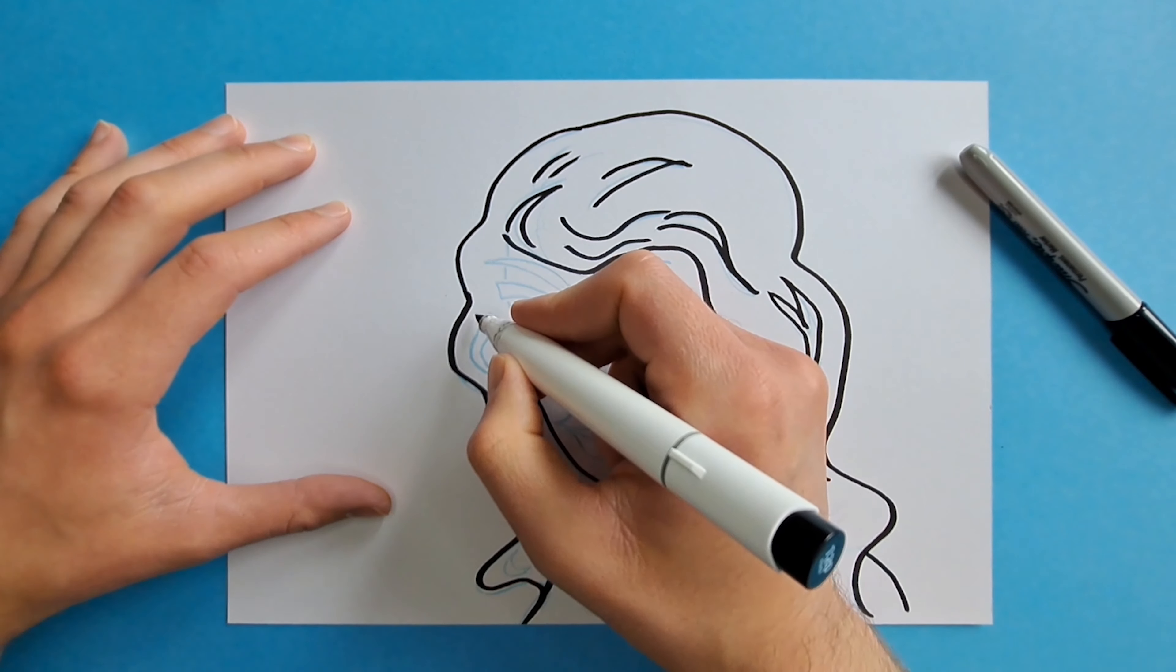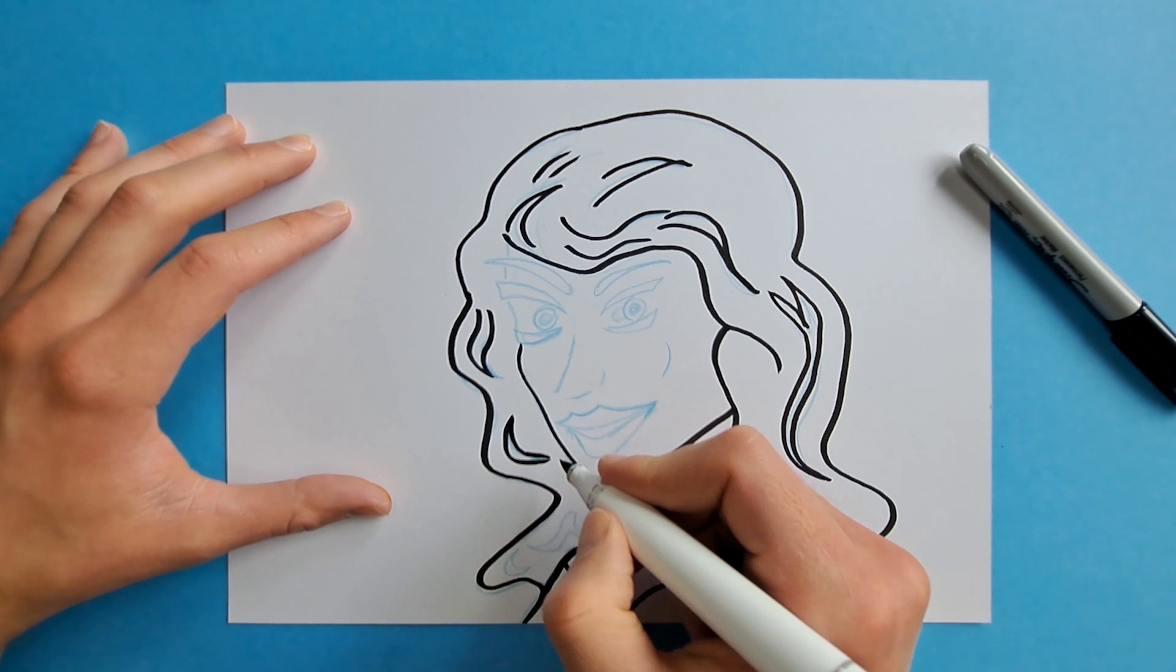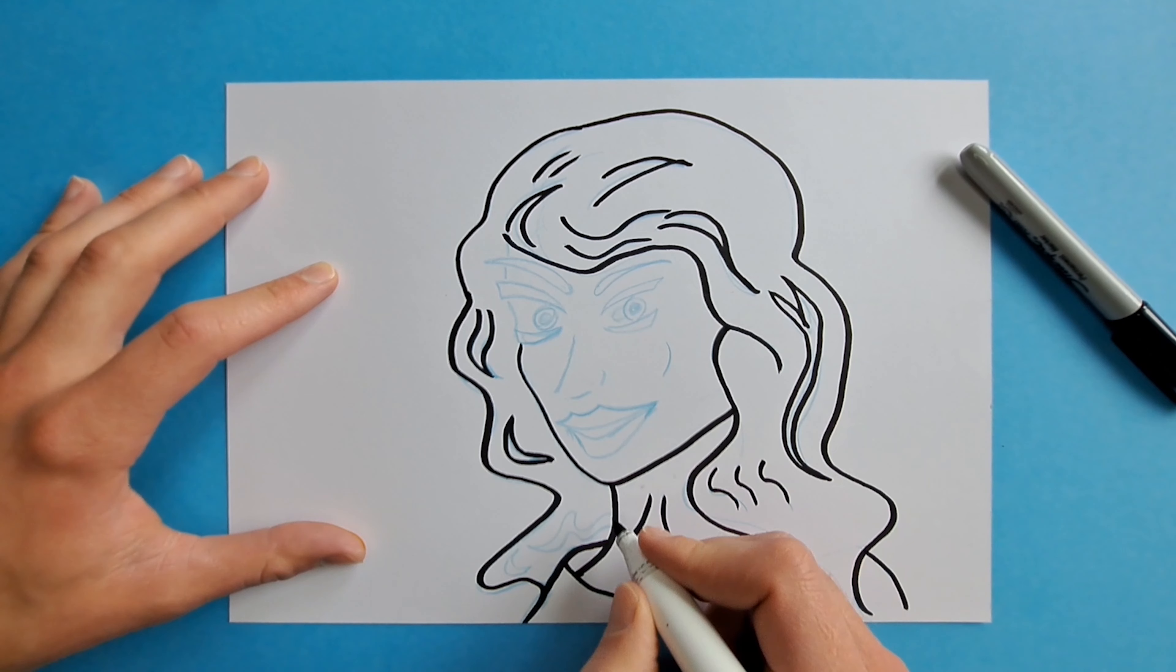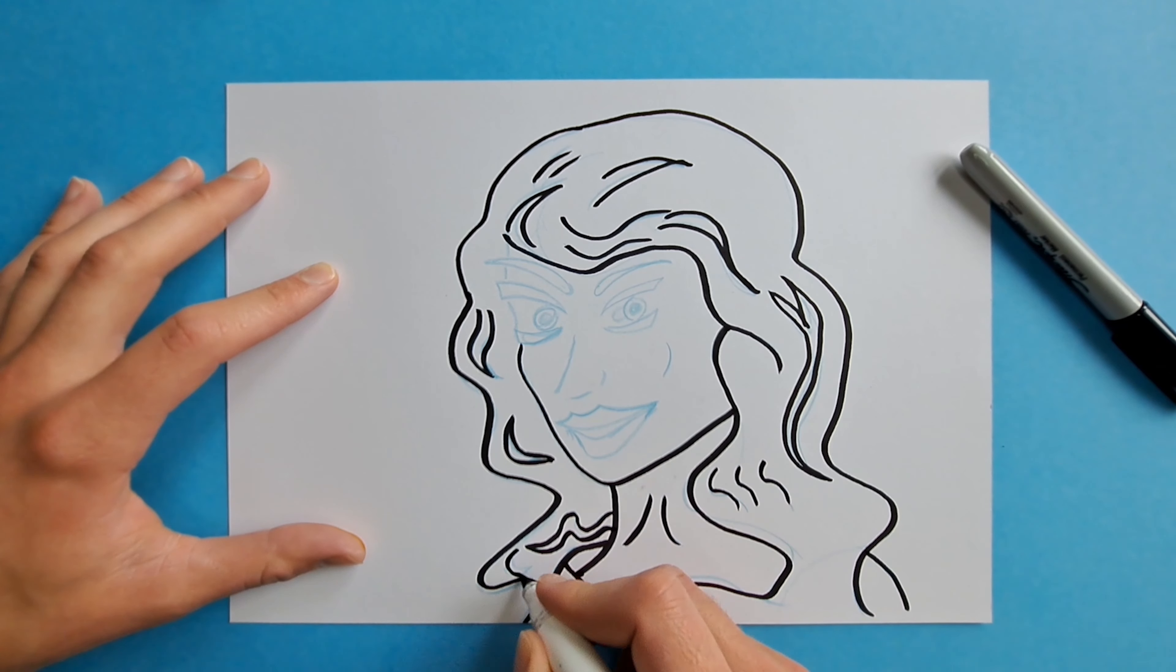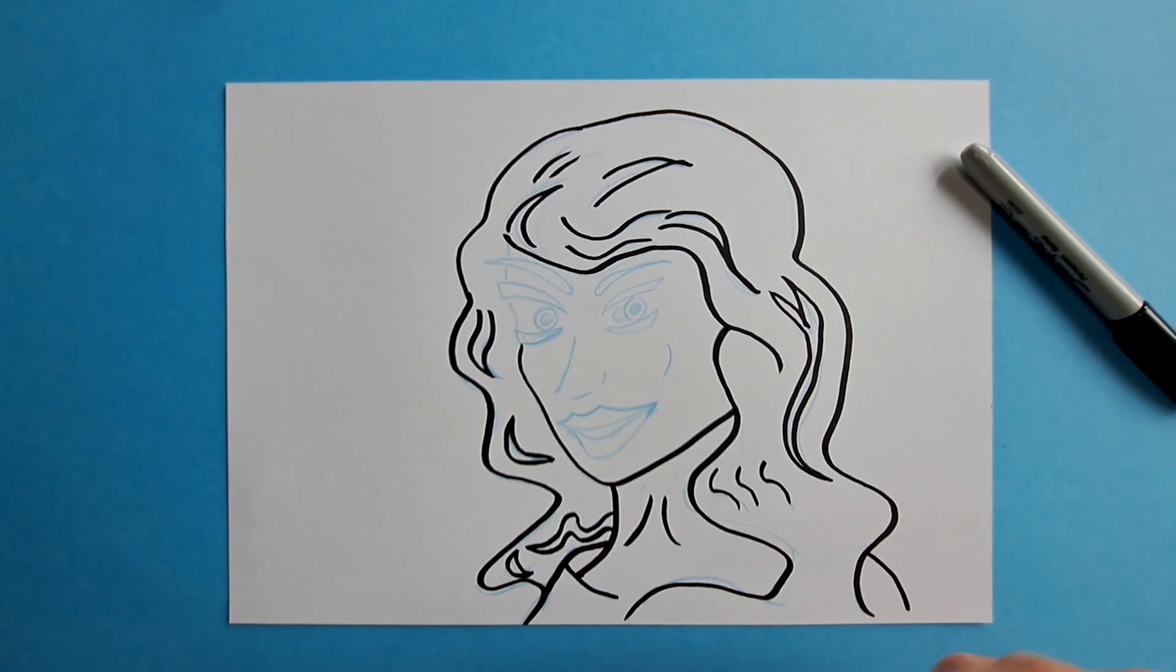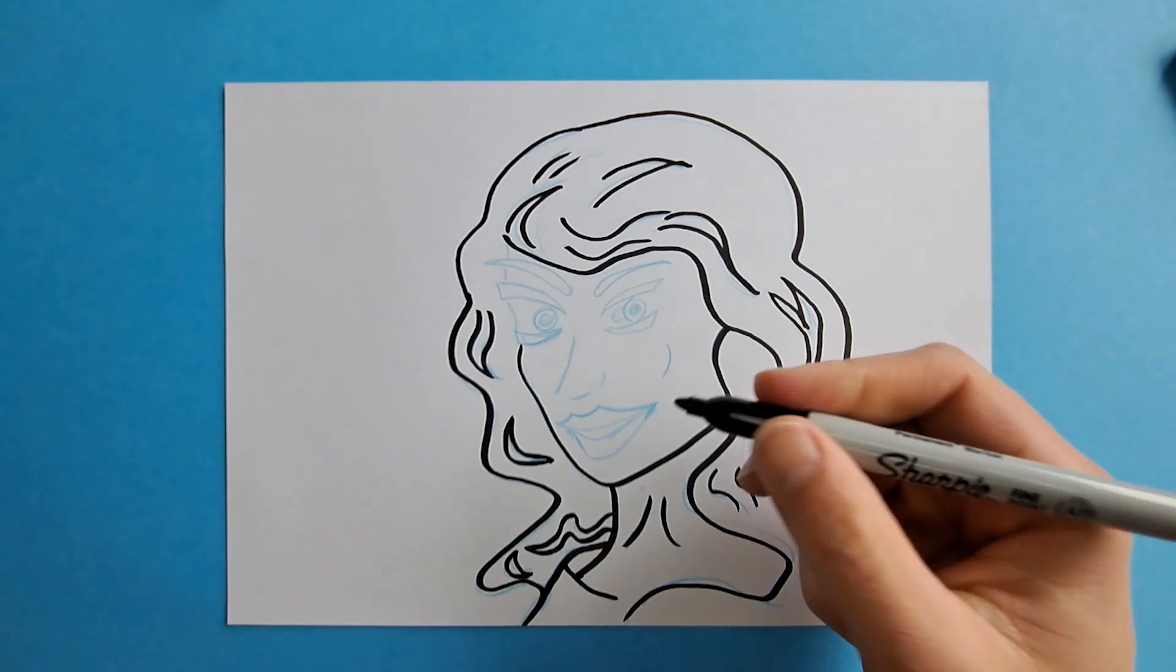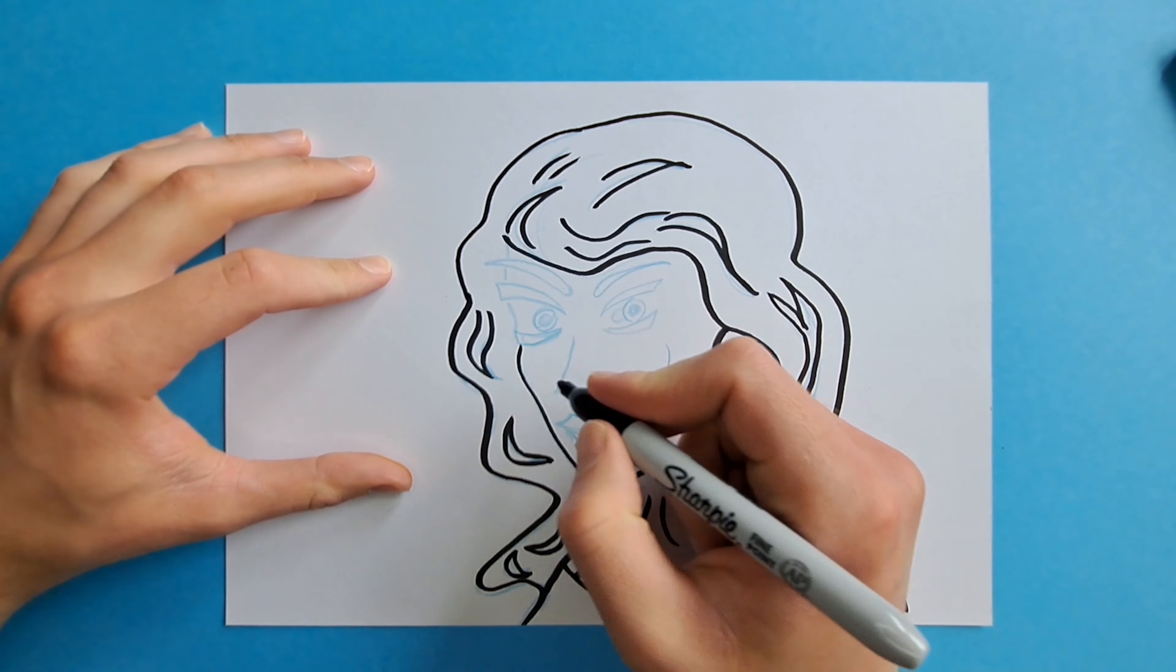That's it. And then here, the outlines. Then I'm going to add some more details to give it some life. Now I'm going to switch over to this pencil instead, so that I can color her facial features which are a little more detailed.